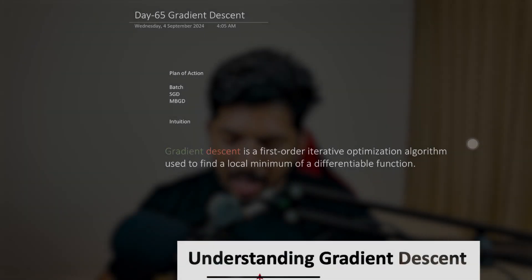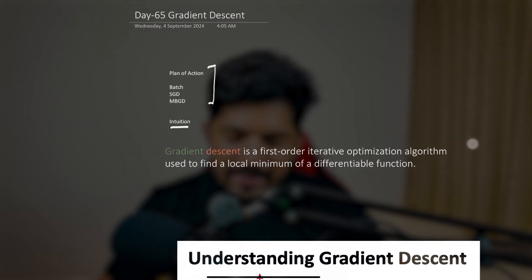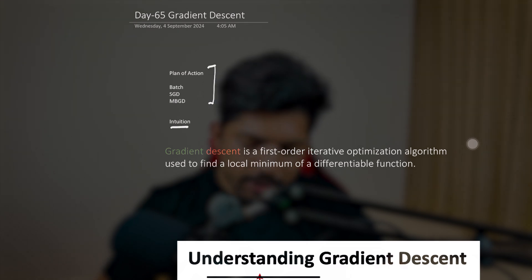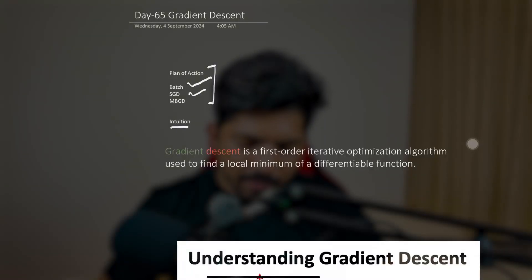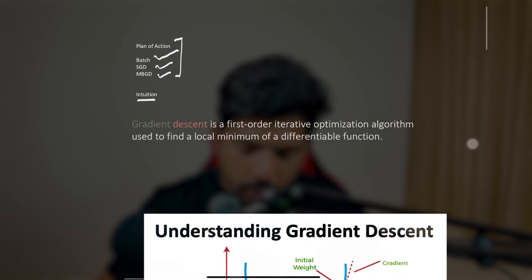Please stay focused for a few minutes and you will see that it will become a piece of cake for all of us. I'll try my best to give you the complete intuition. In the first session we will only understand the real intuition so that it can be very interactive. So without further ado, let's get started. The plan of action for gradient descent is that first we will understand the intuition, then the types of gradient descent: batch gradient descent, stochastic gradient descent, and mini-batch gradient descent.